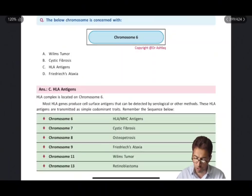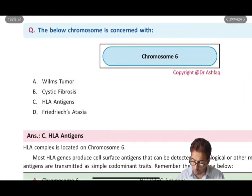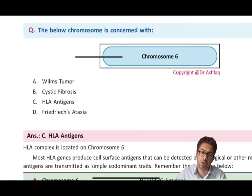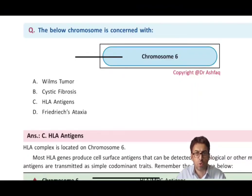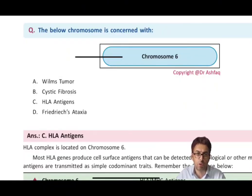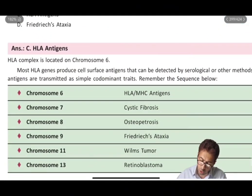The first question asks: the below chromosome is concerned with what? Chromosome 6 is shown, and the question tests your knowledge about the linkage of chromosomes with diseases or pathology. You have to identify whether chromosome 6 is associated with: option A, Wilms tumor; cystic fibrosis; HLA antigens; or Friedreich's ataxia. Some chromosomes have important linkages that you need to remember.